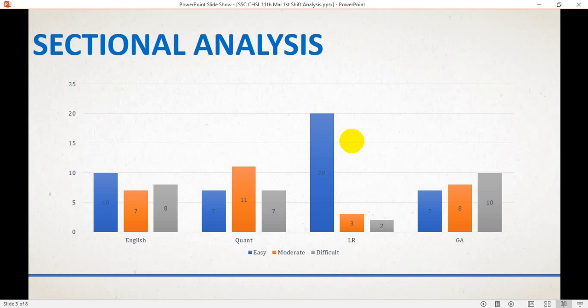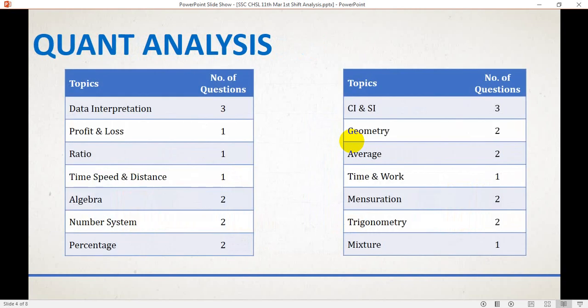Quant analysis: here is the number of questions appearing from different sections. You can pause the video and look by yourself at what topics kept higher weight in the paper. Data interpretation had 3 questions. Algebra, number system, percentage, geometry, average, mensuration, and trigonometry had 2 questions each. Compound interest and simple interest had 3 questions, and all rest topics had 1 question each.